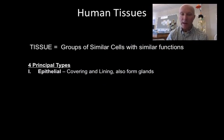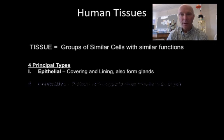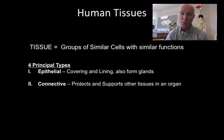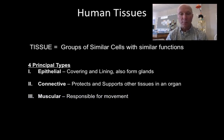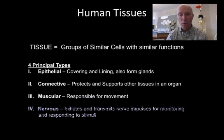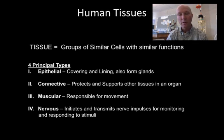The four principal tissue types are: epithelial tissue, which is covering and lining and also forms glands; connective tissue, which protects and supports other tissues in an organ; muscle tissue, responsible for movement; and nervous tissue, which initiates and transmits nerve impulses for monitoring and responding to stimuli.